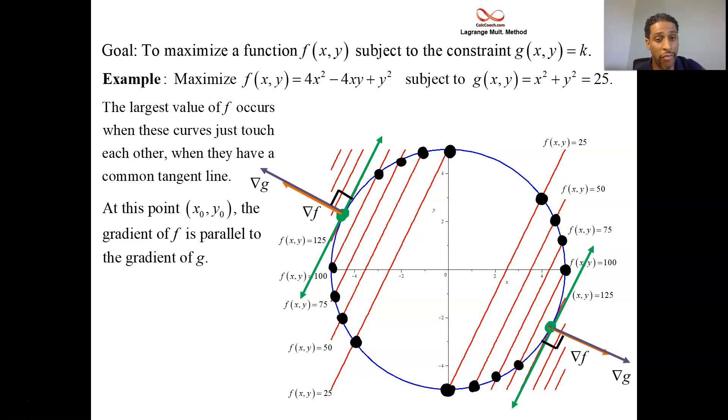So the gradient of f is equal to lambda—that's our constant, scalar multiple—times the gradient of g. These two gradients point in the same direction, and that happens at the place where the function is maximized at. It also happens at the place where the function is minimized as well.